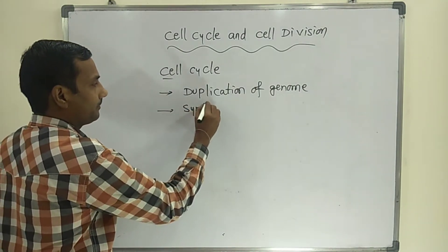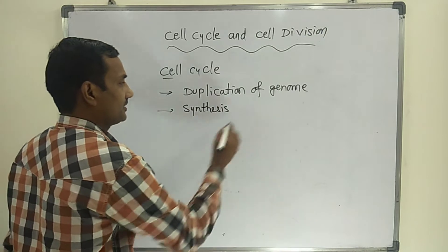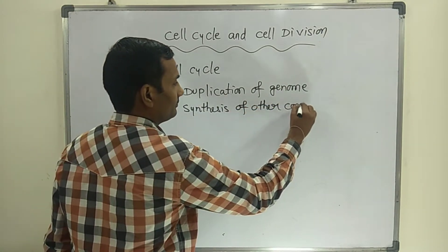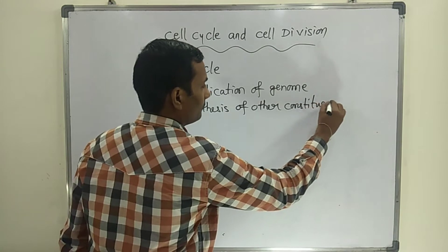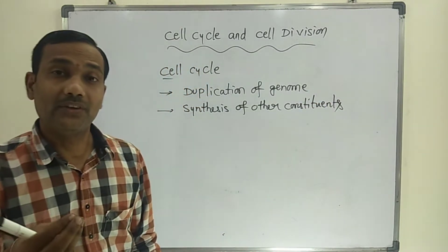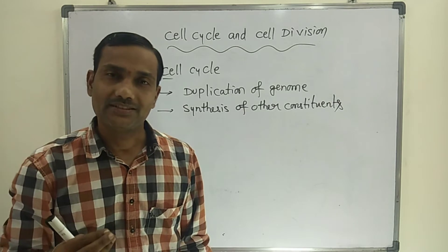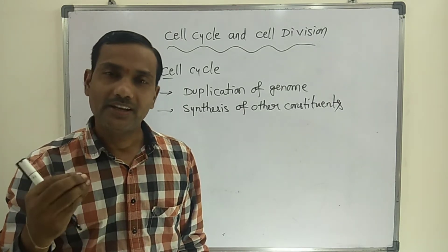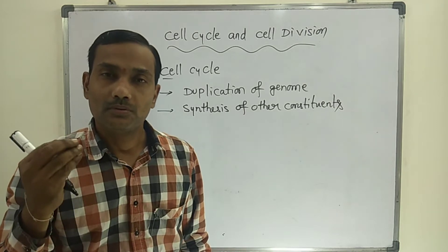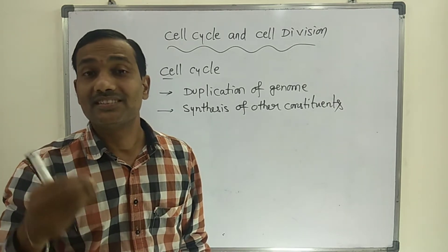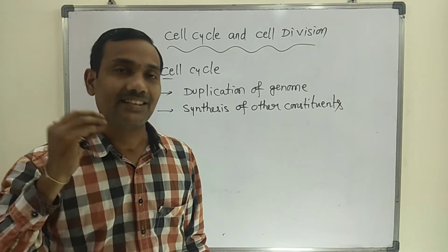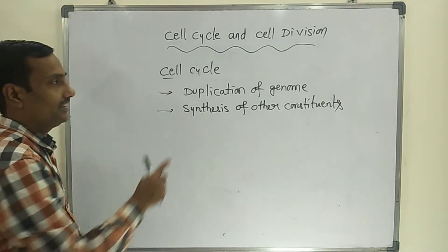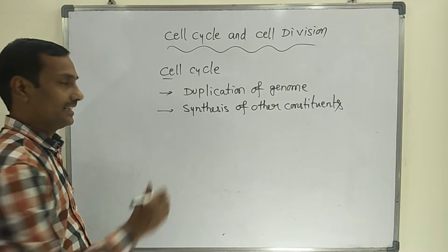The second major event is synthesis of other constituents. During cell division, various components — various cell organelles, proteins, RNA molecules, and different types of components — are synthesized, which are necessary for cell division. That is the second major event that occurs during the cell cycle.